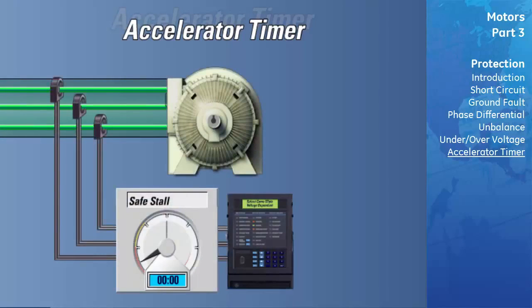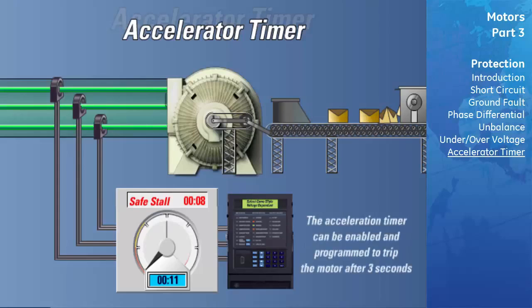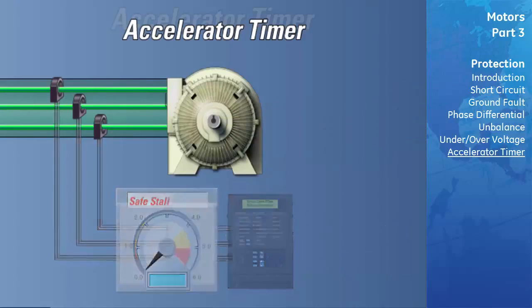Accelerator Timer. The relay's thermal model is designed to protect the motor under both starting and overload conditions. The acceleration timer may enhance the motor protection scheme. For example, a given motor should always complete a start within 2 seconds. If the safe stall time is 8 seconds and a failure occurred such that the motor was held in a stall condition, the motor would normally remain at stall for a total of 8 seconds before the thermal model would generate a trip. The accelerator timer could be configured to generate a trip if the motor remained at stall for more than 3 seconds, thereby reducing the stress on both the motor and driven equipment.